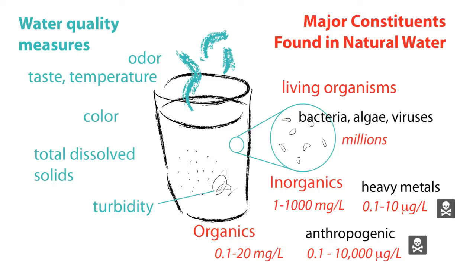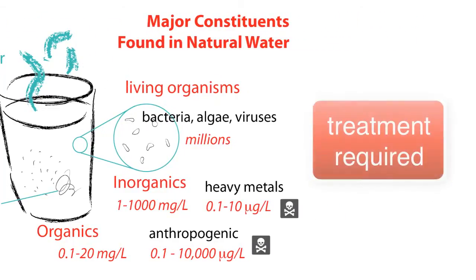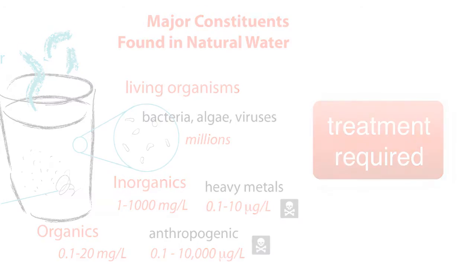Another quality measure is turbidity, which is the measure of the optical clarity of water and is caused by suspended particles in water. So natural freshwater also needs treatment prior to human consumption; however, treatment is not always available.